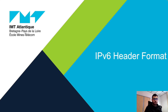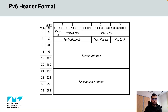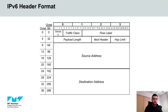Hello folks, in this video we are going to see the IPv6 header format. Here we have the IPv6 header format which consists of 8 fields and 40 bytes in total. In the following, we are going to analyze the IPv6 header format field by field.